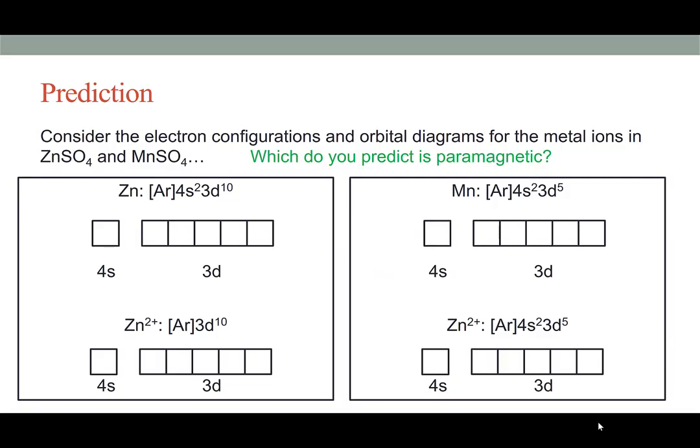In a minute we're going to look at what happens given a paramagnetic and a diamagnetic substance. To prepare for that, we'll look at some orbital diagrams. The two materials we'll be studying are zinc sulfate and manganese sulfate. In both cases, we're dealing with divalent cations from the fourth period of the periodic table.